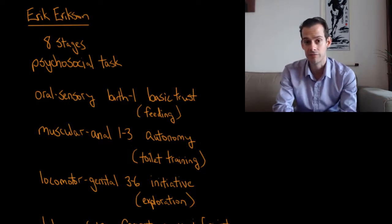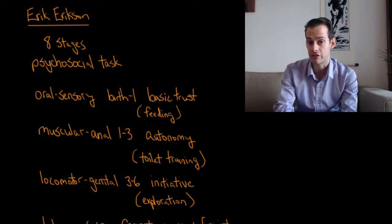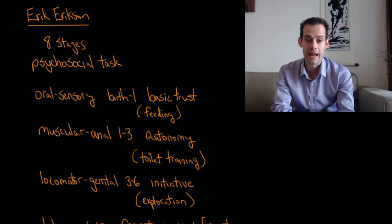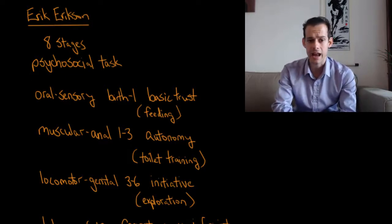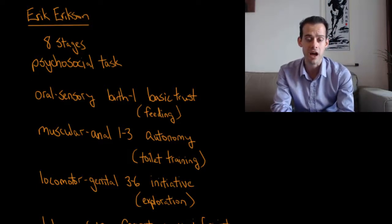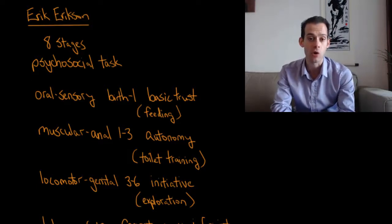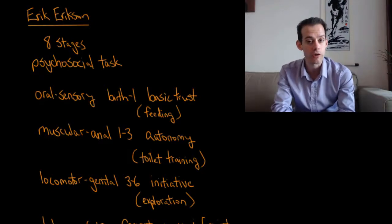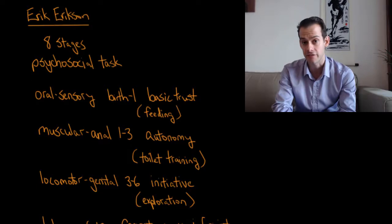Then we move to the next stage which is the muscular anal stage. This should remind you of Freud's anal stage, and this lasts from age one to about age three. Erikson thought the main task of this stage is developing a sense of autonomy. You're learning to take control over yourself. In this case, as Freud suggested, the focus is on toilet training. You're learning how to control your own body, and this will hopefully help you to develop a sense of autonomy.